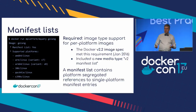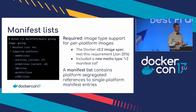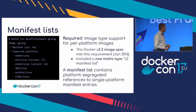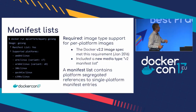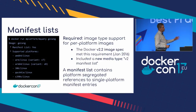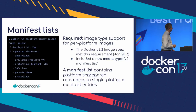The manifest list is the way we support having per-platform images under a single name or reference in the registry. A lot of that work was finalized last January. There's a new media type the Docker registry understands called the manifest list — effectively a platform-segregated set of references. I build image A on Intel x86, maybe the same Dockerfile on S390X or Power, and the manifest list lets me assemble those under a single name in the registry to get that seamless Docker run experience.